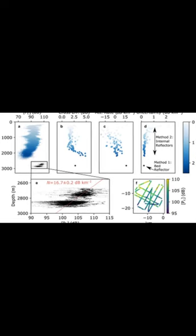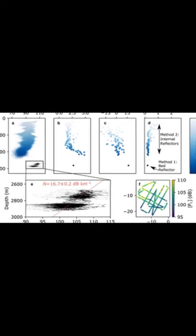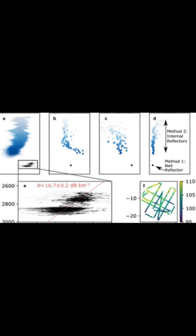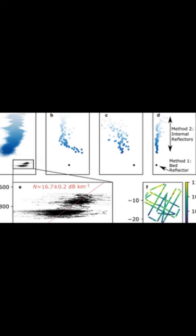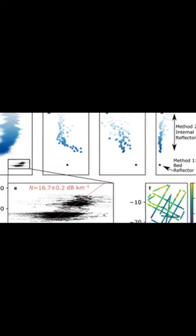They then applied this framework to a new ground-based radar survey from South Pole Lake, comparing selected empirical methods to the expected attenuation from a temperature- and chemistry-dependent Arrhenius model.